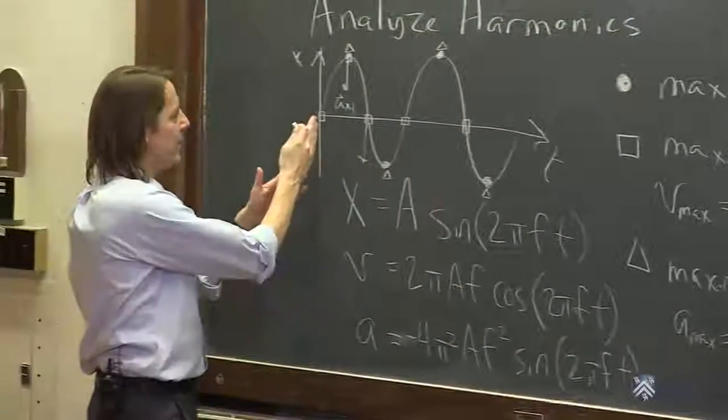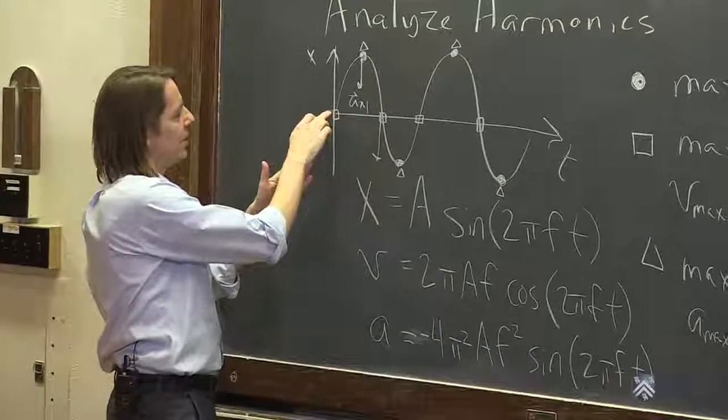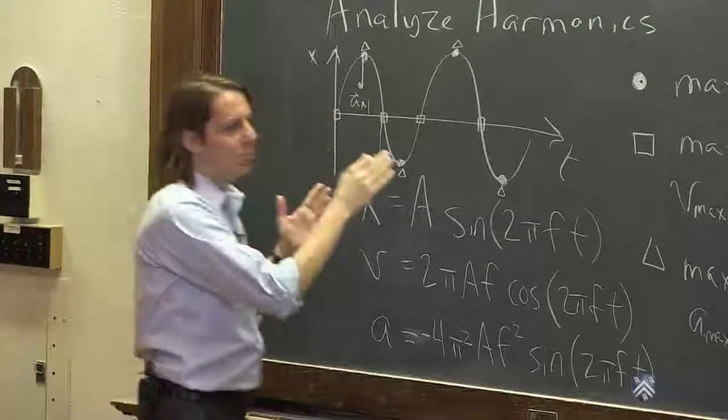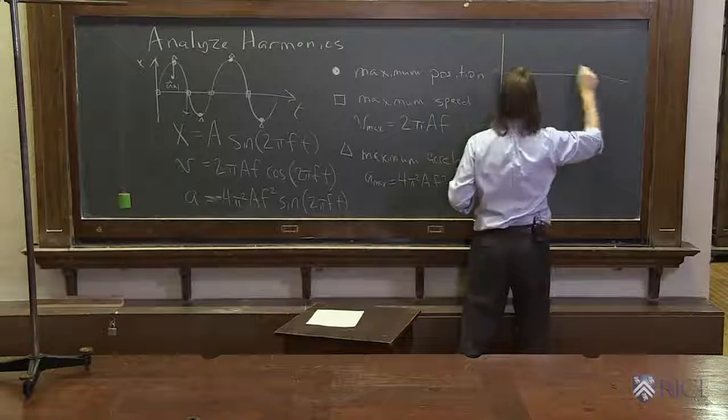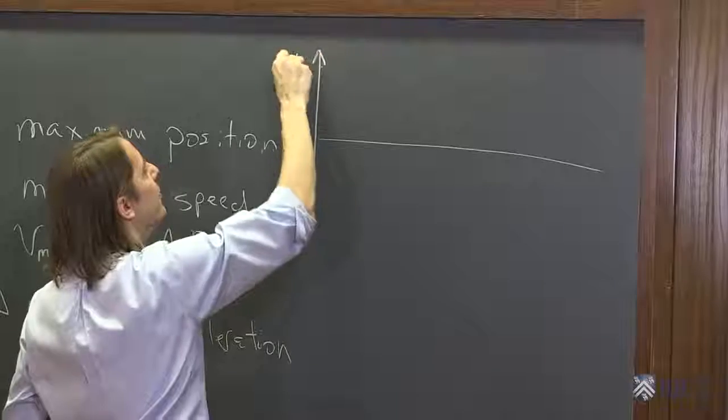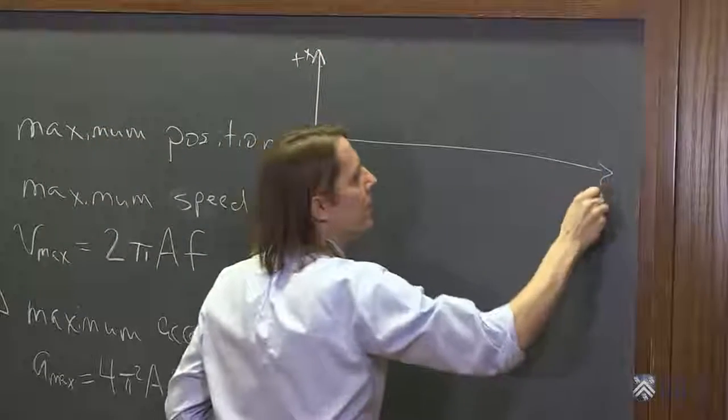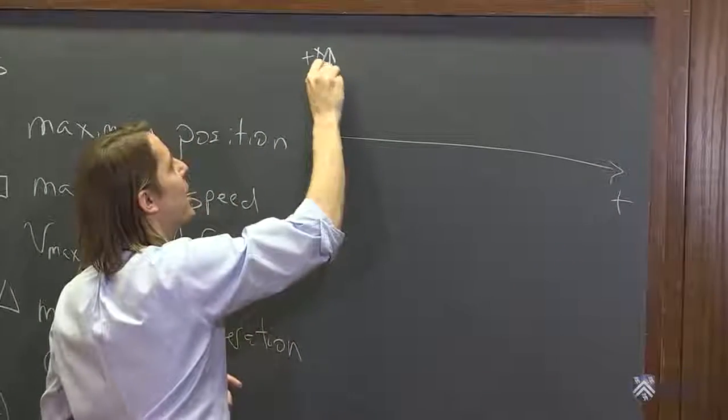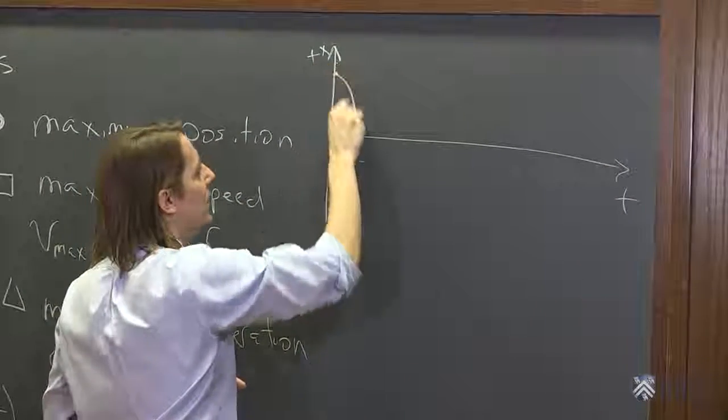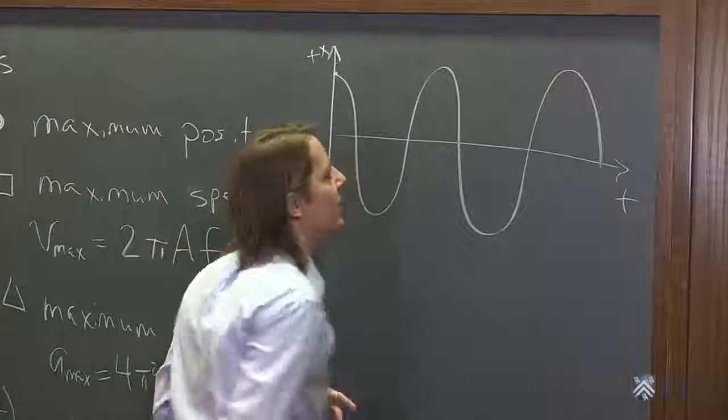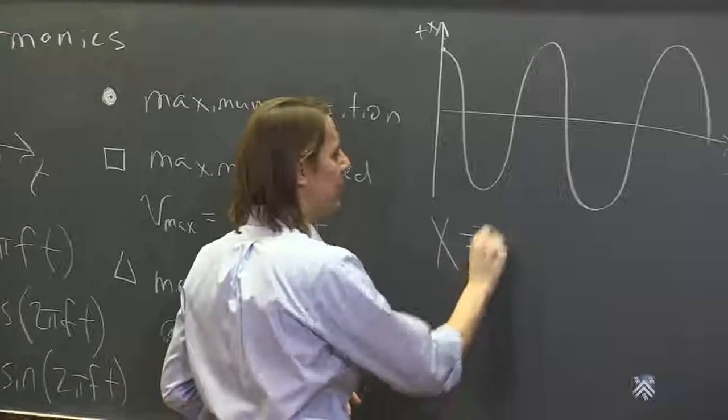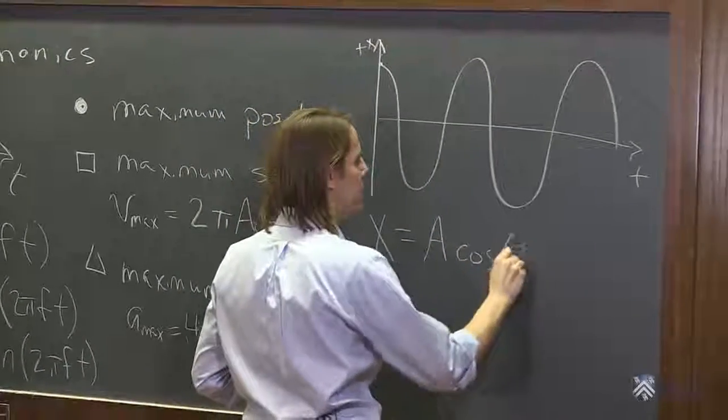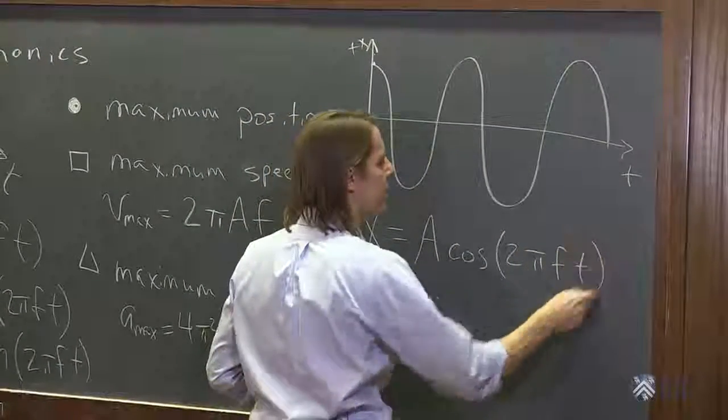So a sine says, at time equals 0, the position is 0. But you could also say, maybe I'll start at a different time. And maybe I'll have the case that I'll start it at a maximum up here at time equals 0. And then do a sinusoid like that. And you can. Then you're just describing it as a cosine. x = A cos(2πft).